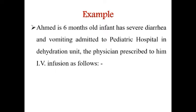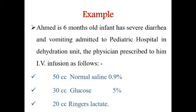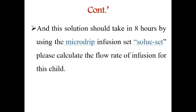Example: Ahmed is a six-month-old infant with severe diarrhea and vomiting, admitted to a pediatric hospital in a dehydration unit. The physician prescribed IV infusion as follows: 50 cc normal saline, 30 cc glucose 5%, and 20 cc Ringer's lactate, to be given over eight hours using a micro drip infusion set (soluset). Calculate the flow rate of infusion for this child.